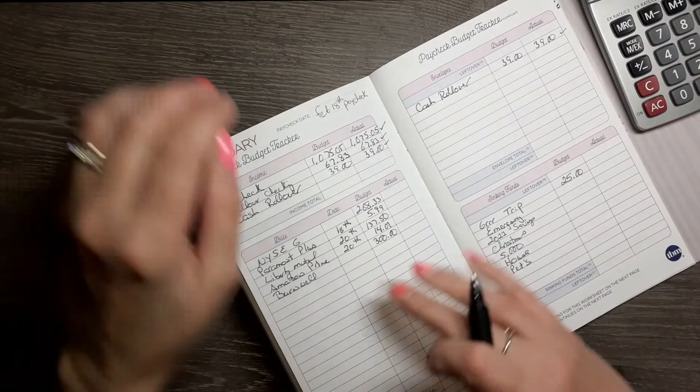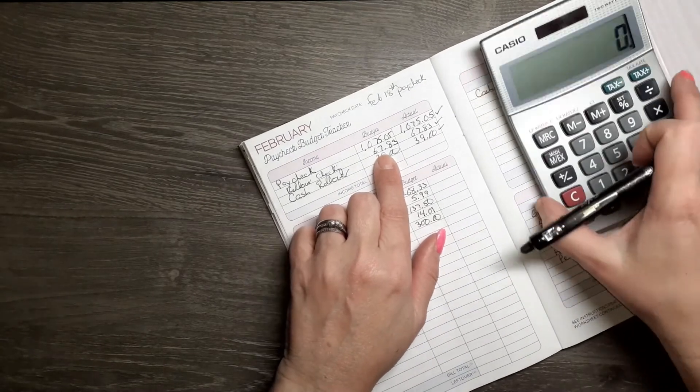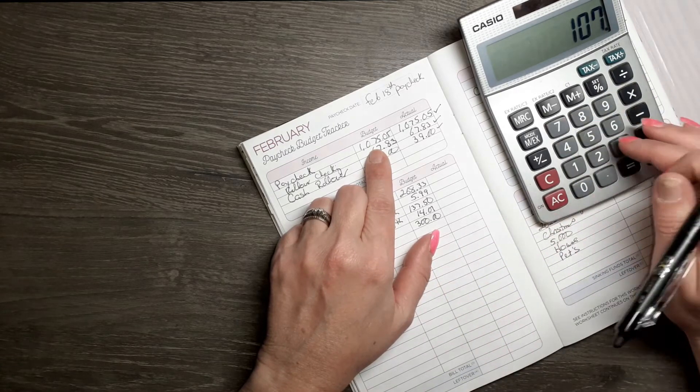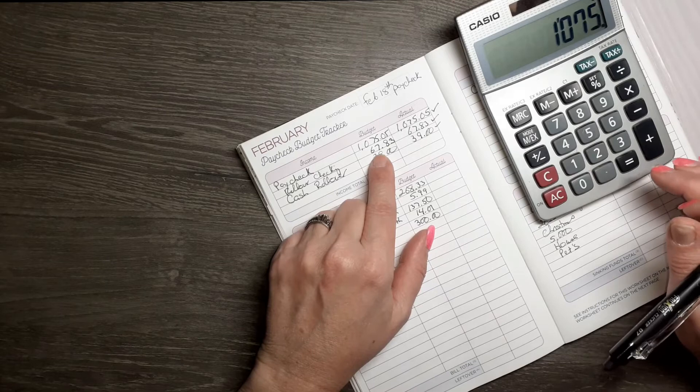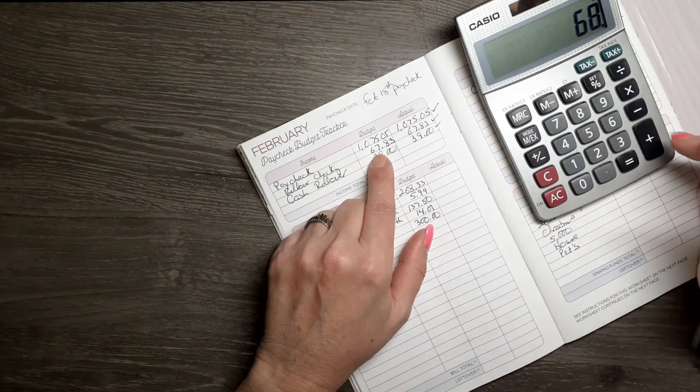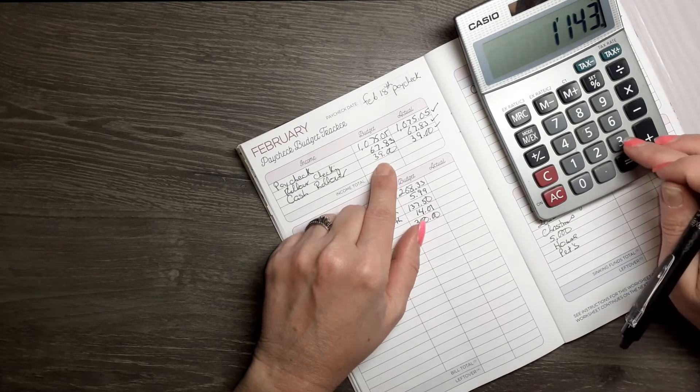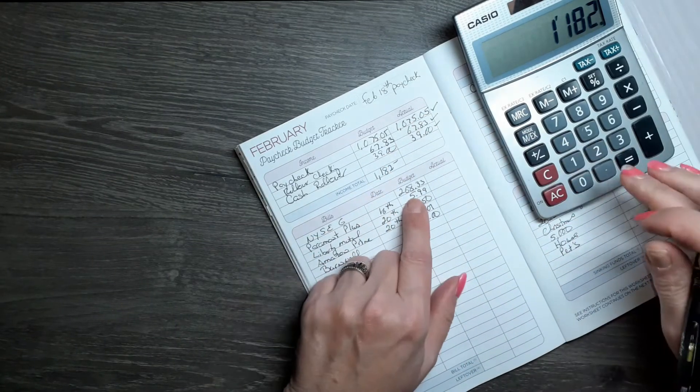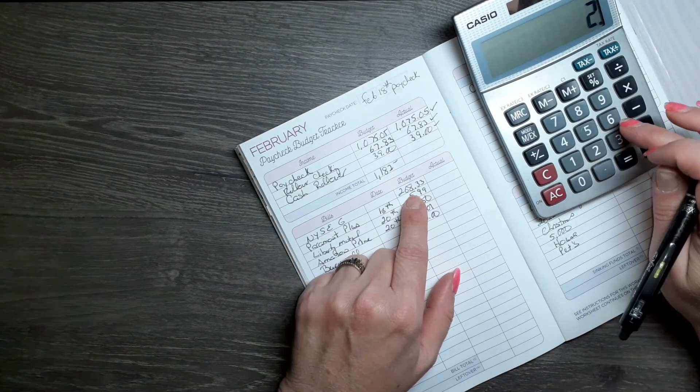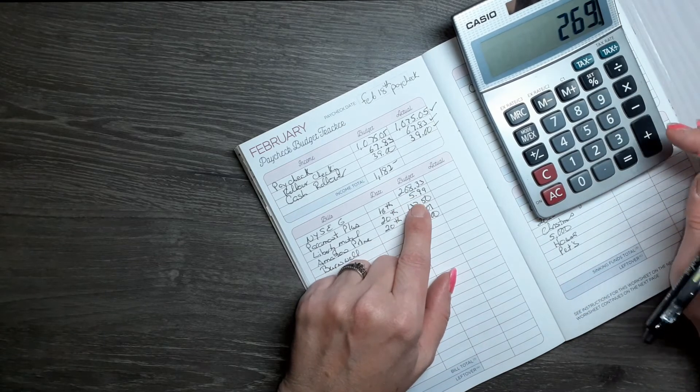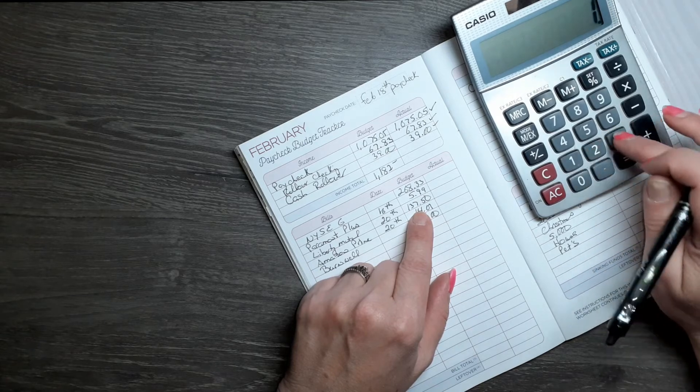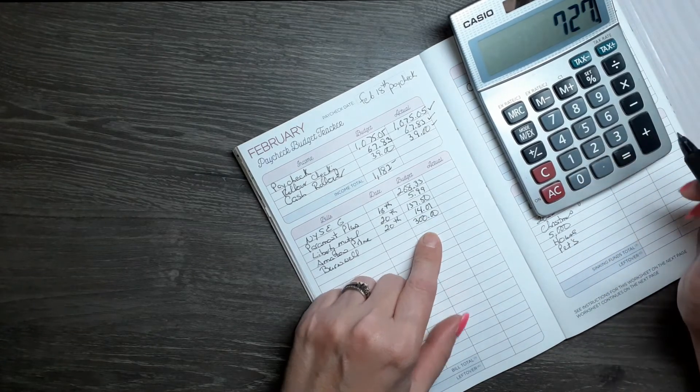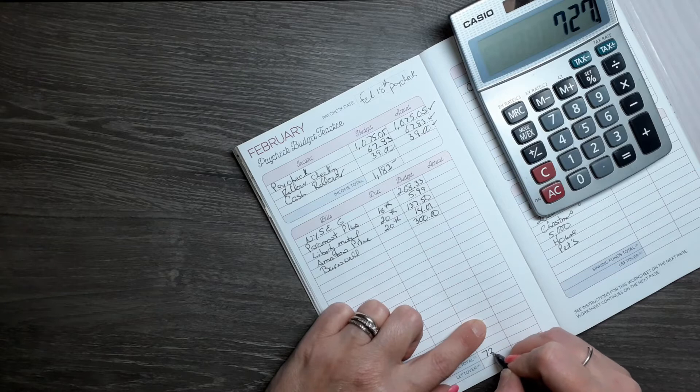My paycheck was normal, no overtime, then $68 - we had some snow days and stuff - and cash rollover is $39, so $1,182. Nice Egg is $269, Paramount Plus $6, Jeep insurance $138, I got an email Amazon Prime's going up $14, then Burnwell's $300. Those are $727.